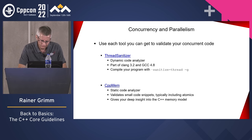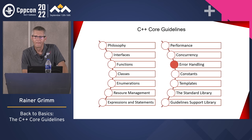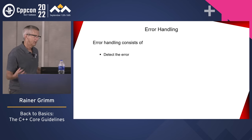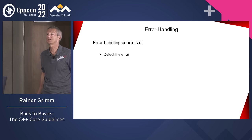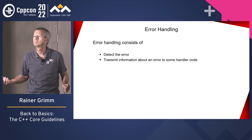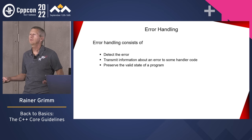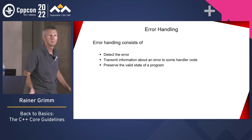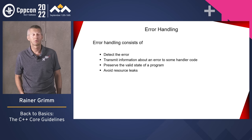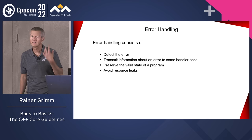Error handling: when doing error handling, think about four things. First, detect the error. Second, transmit information about the error to some handler code. Third, preserve the valid state of the program — if after an error you don't know if your program is in a valid state, shut it down. Fourth, avoid memory leaks or any resource leaks. Error handling is not only about the error itself, but about all four of these aspects.